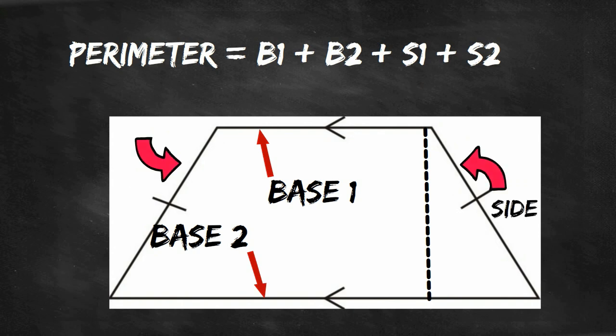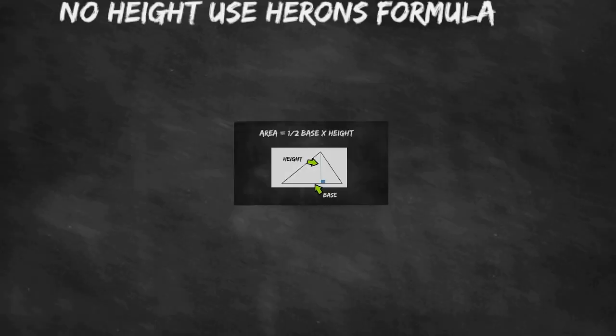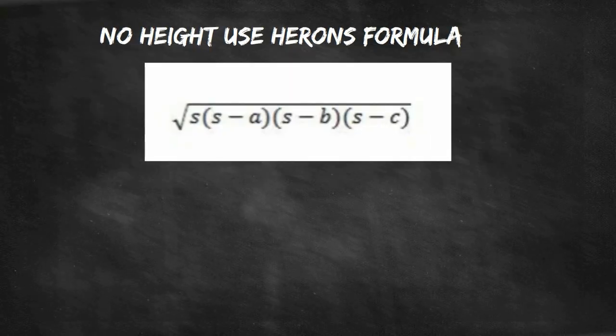The area of a triangle is equal to 1 half base times height. If the height is not given you can use Heron's formula, which is the square root of s times s minus a times s minus b times s minus c.